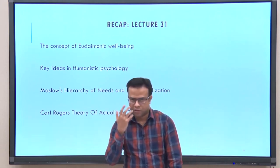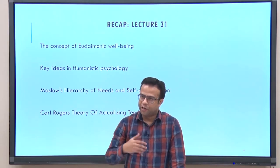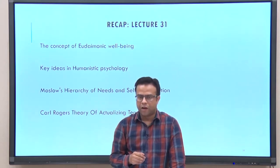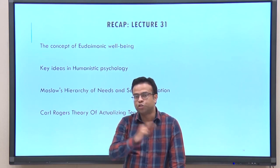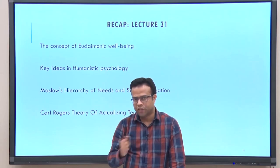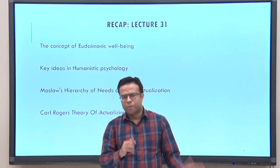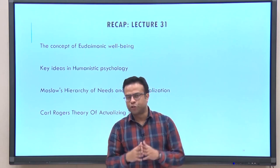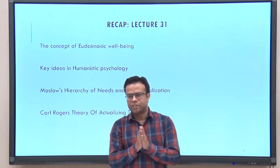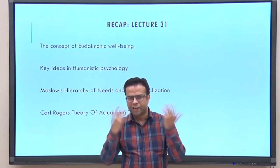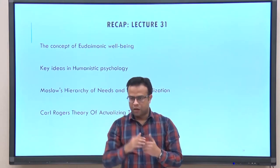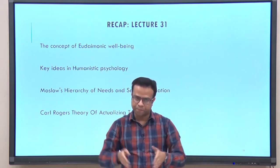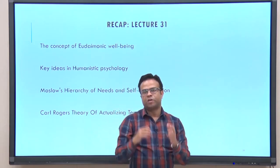In the last lecture we talked about the concept of self-actualization, specifically from the humanistic psychological perspective and from two theories: Abraham Maslow's theory and Carl Rogers' theory. Maslow is primarily known for giving the model of human need hierarchy. He proposed that human beings have many needs, but all these needs can be arranged in a hierarchical order, with some needs more fundamental than others.